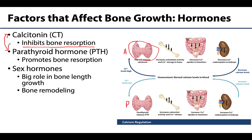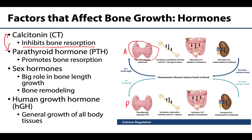Other hormones play a role in bone growth. Sex hormones — estrogen and testosterone — can both stimulate osteoblasts, particularly during growth spurts, and also promote osteoblast activity into adulthood during bone remodeling, playing a role in slowing bone resorption. Human growth hormone, secreted by the pituitary gland, causes general growth to all body tissues, including bone.